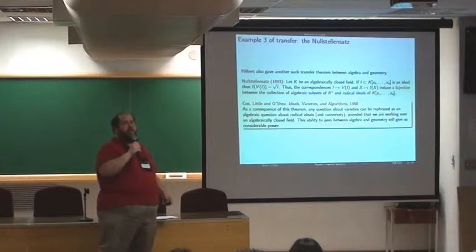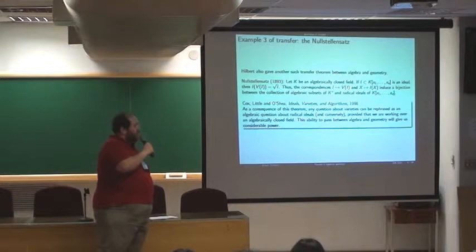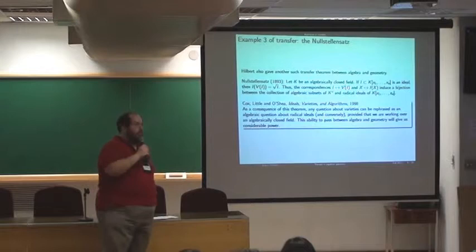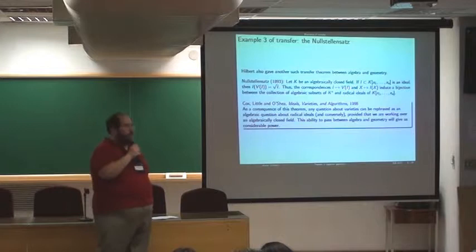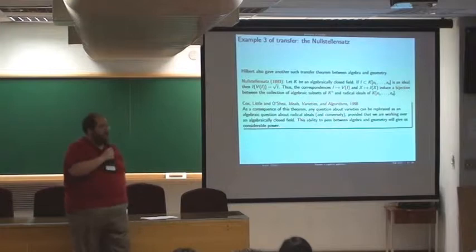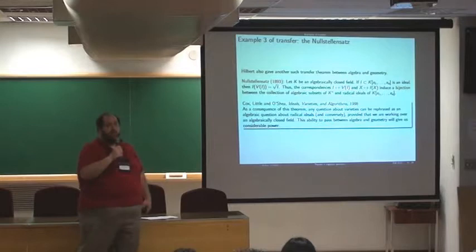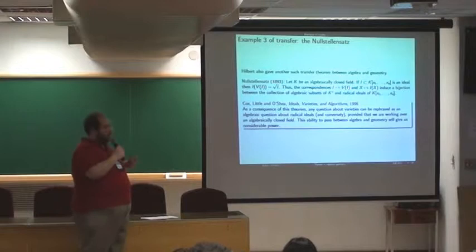For K, an algebraically closed field, if we have an ideal that's a subset of the polynomial ring in N variables over that field, then the ideal of the variety of the ideal is equal to the radical of that ideal. And, again, to give this in full detail, I would have to explain all these terms. I'll explain some of them in the next couple of slides. But the gist of it is that, as the result shows you, what you obtain is a bijection between the radical ideals of a particular polynomial ring and the algebraic subsets of a particular field structure. And geometers are impressed with this result as an example of transfer.